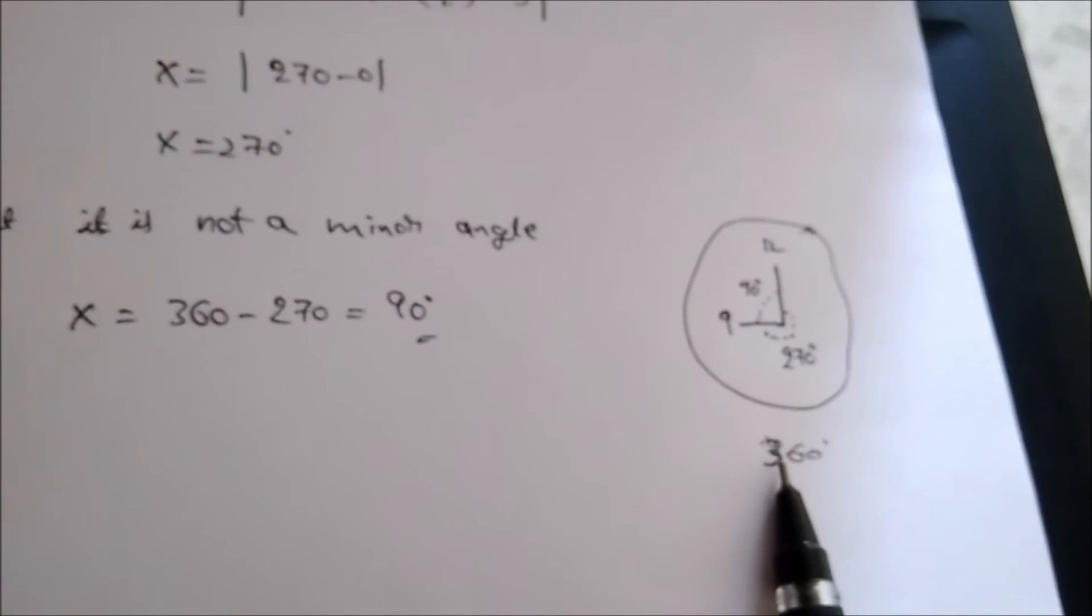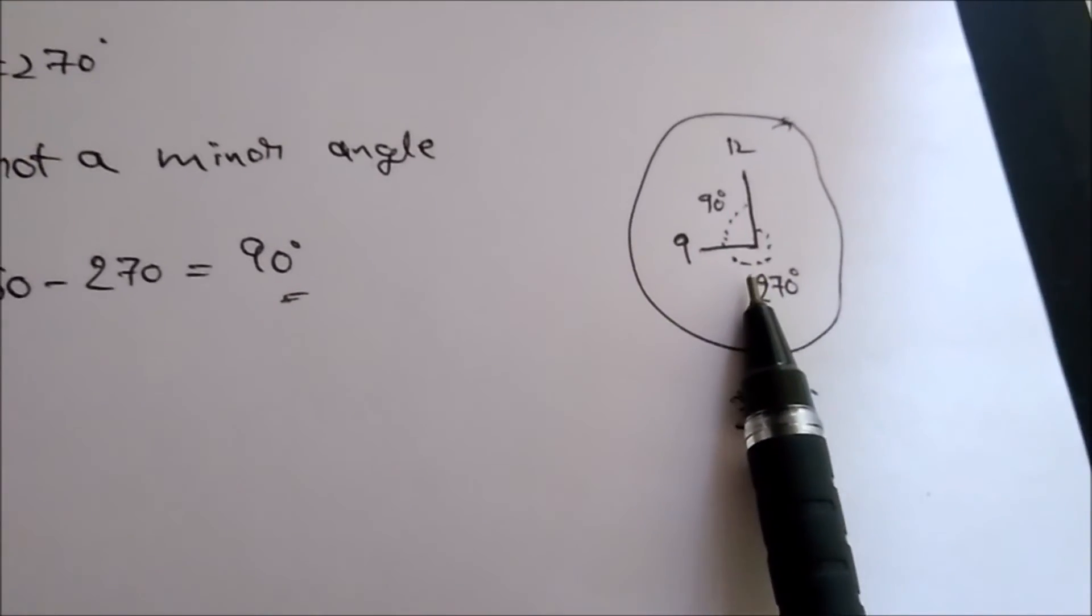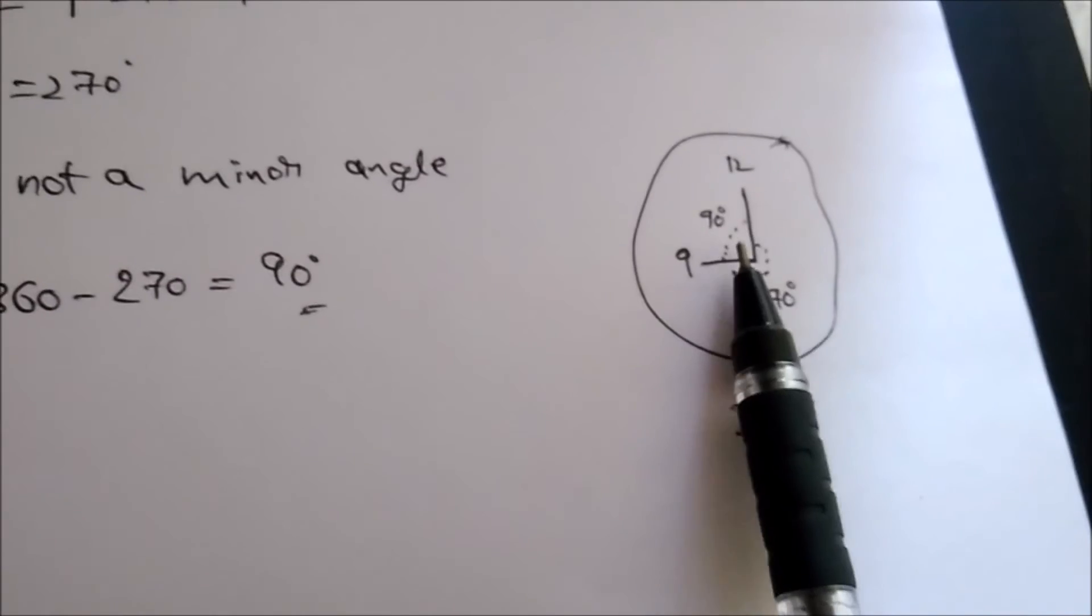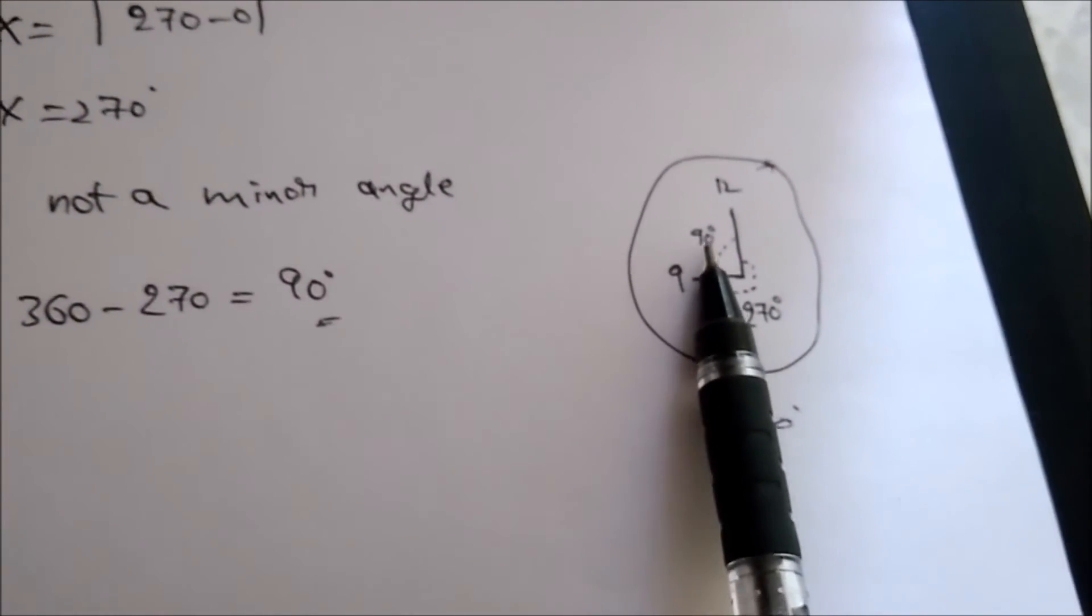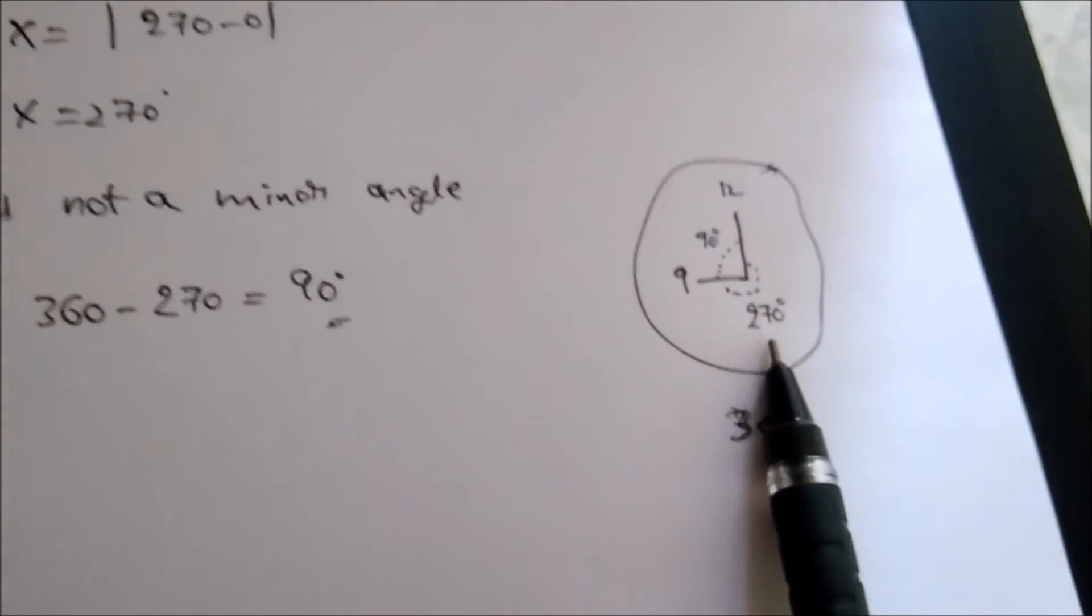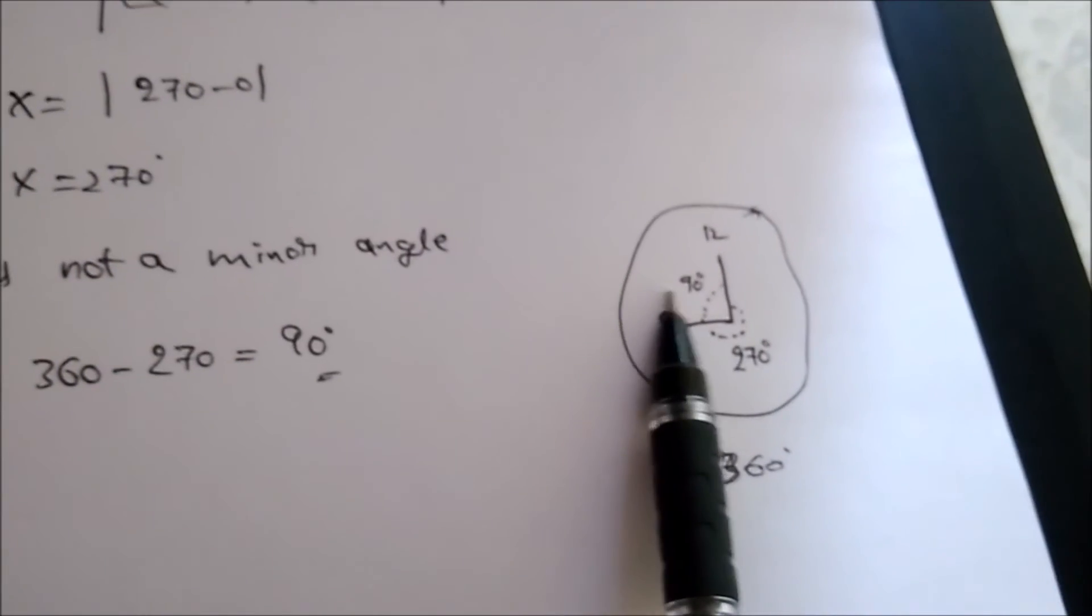So 360 minus 270 gives 90 degrees. Here, compare 90 and 270 degrees. Here 90 degrees is the lesser value and 270 degrees is the major value. So 90 degrees is a minor value and 270 degrees is a major value.